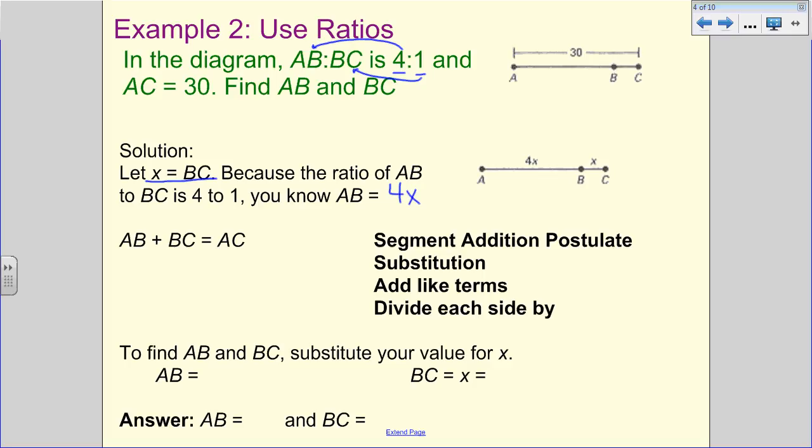And so because that ratio is 4 to 1, we know that AB is 4 times that. So 4X. If it was a 2 to 1 ratio, it would be 2X. We're now going to go back and pull and use the things that we learned earlier in the year. We know that AB plus BC equals AC. That's our segment addition. The smaller segment AB plus the smaller segment BC equals that total amount.